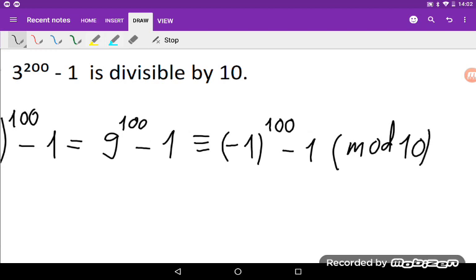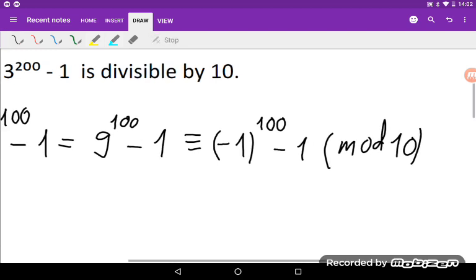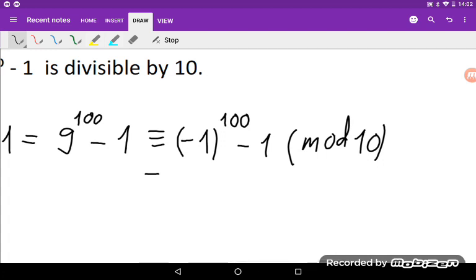And now this is actually congruent to negative 1 to the power of 100. That is just 1 minus 1 mod 10, and 1 minus 1 is 0 mod 10.